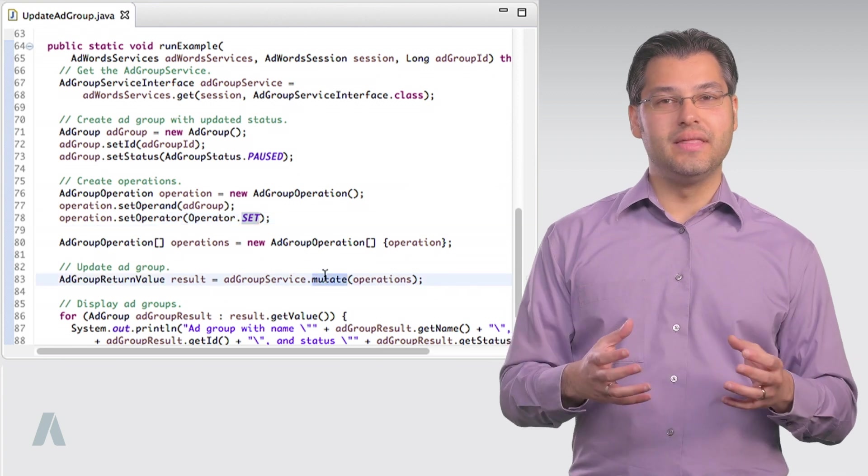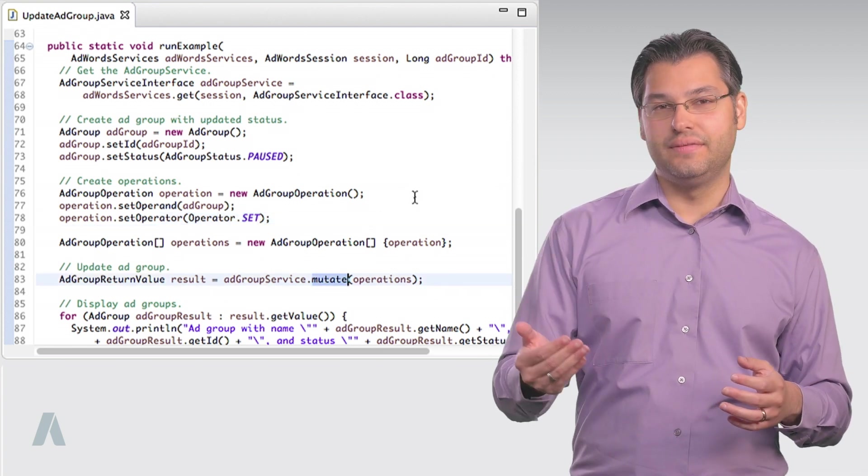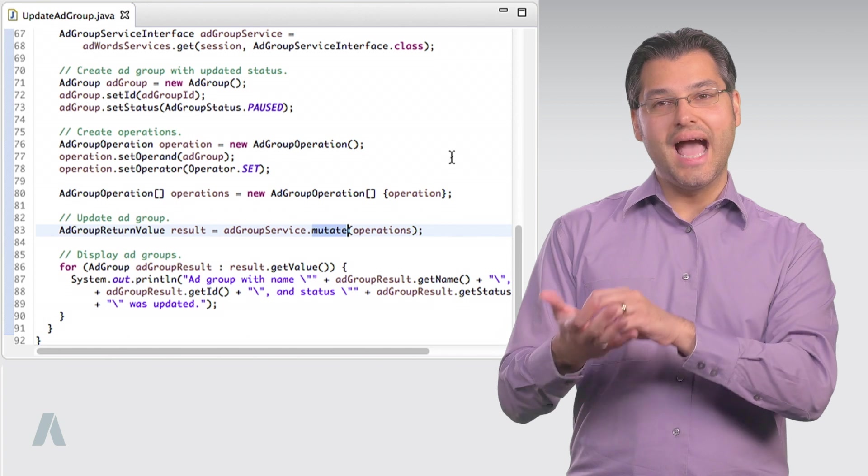Lastly, it calls the mutate method of the ad group service interface passing in the ad group operation object. So go ahead and replace the placeholder with an ad group ID from your test client account and try running the code.